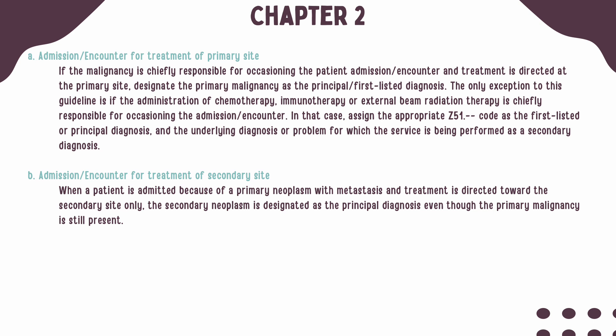When a patient presents with a malignancy and it is responsible for the admission or encounter and the treatment is directed at the primary site, the primary malignancy should be listed first. The exception is when the patient is being seen for the sole purpose of administering chemotherapy, immunotherapy, or radiation therapy. When the encounter is solely to administer chemo, immuno, or radiation therapy, a code from category Z51 should be listed first.